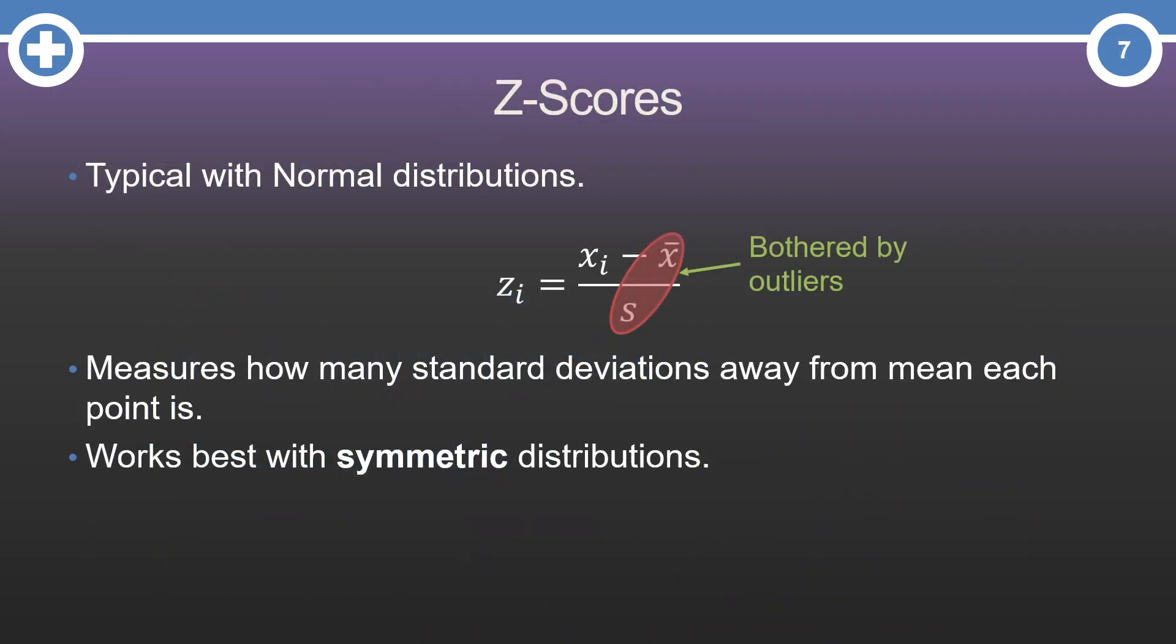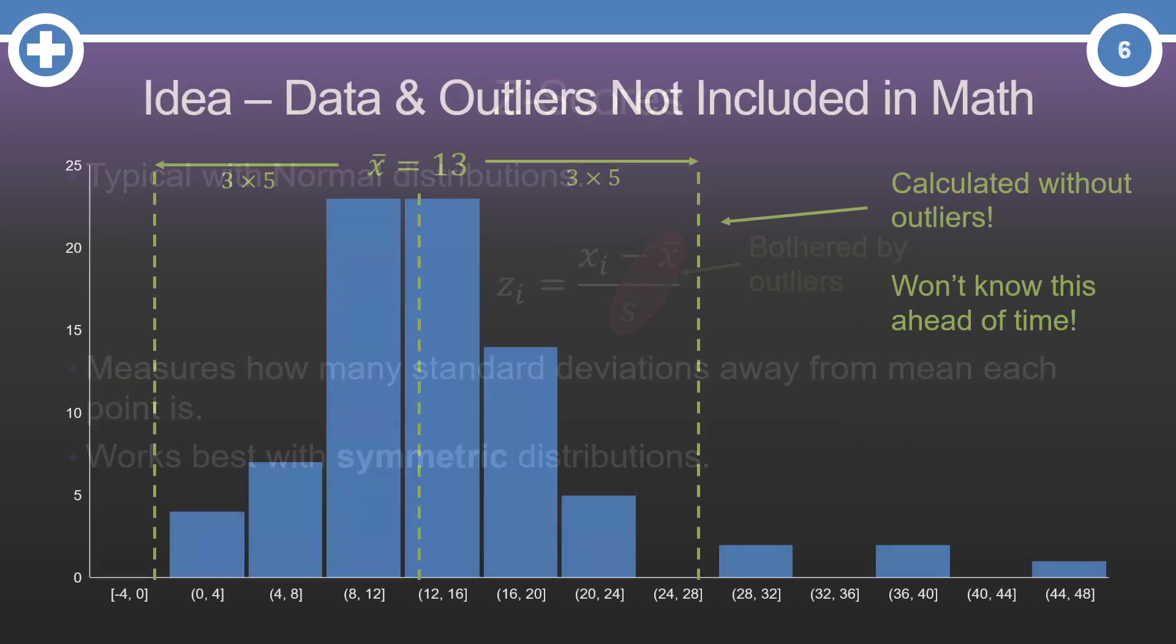You see, z-scores are calculated with the average and the standard deviation as part of the equation. Unfortunately, both of these are bothered by anomalies or outliers. Let me show you what I mean.